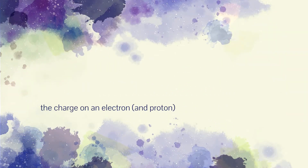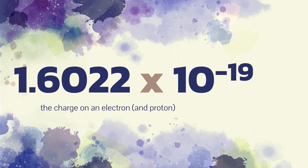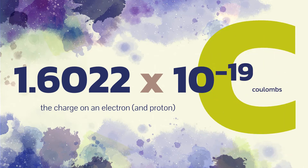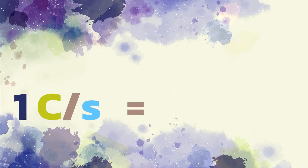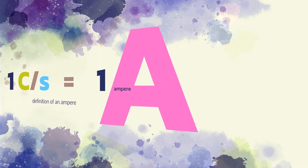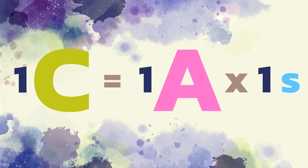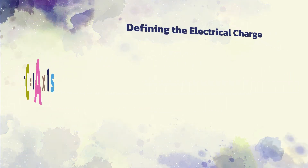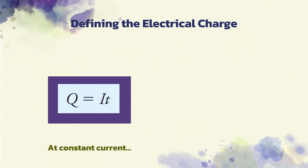The charge on an electron and proton is defined as 1.6022 × 10 to the negative 19 coulombs. A rate of charge flow equal to 1 coulomb per second is the definition of 1 ampere of current. Thus, a coulomb can be considered as that charge carried by a constant current of 1 ampere for 1 second. The charge Q that results from a constant current of I amperes operated for T seconds is expressed in equation 1.